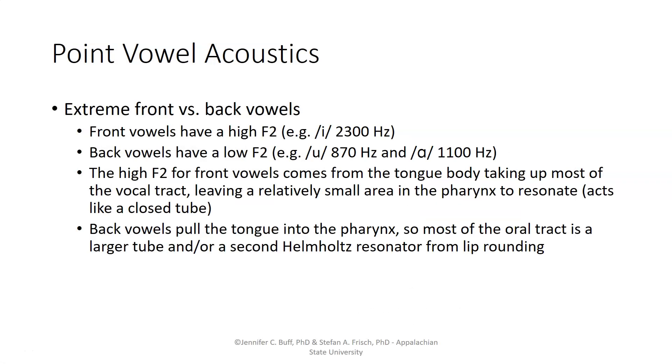Looking at the dimension of front versus back in vowels, we find that front vowels have a relatively high second formant. For example, the high front vowel /i/, with a formant around 2300 Hz. Back vowels have a relatively low second formant, something like 870 Hz for /u/ and 1100 Hz for /ɑ/, again, for our sort of typical male speaker.